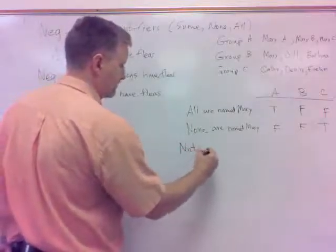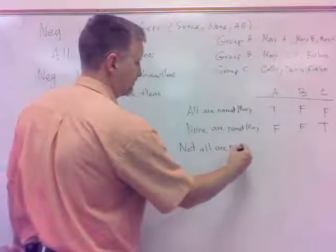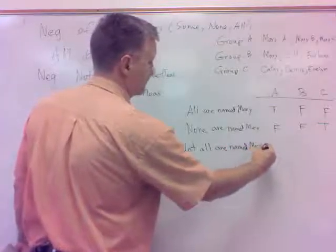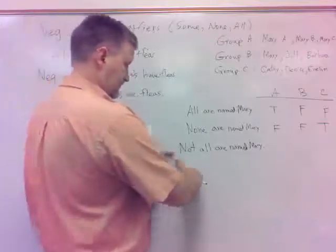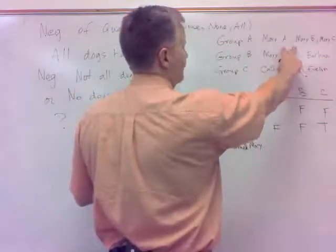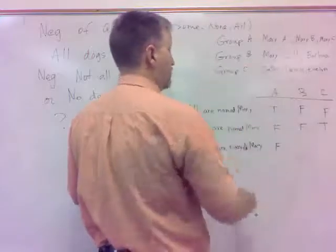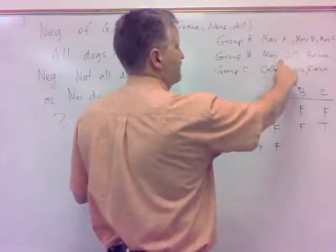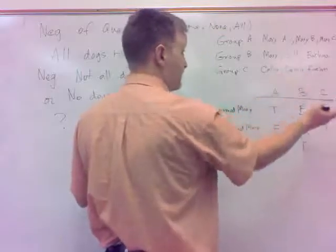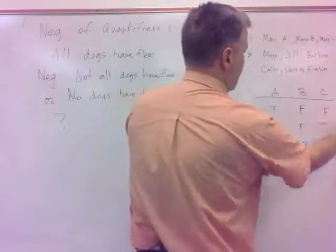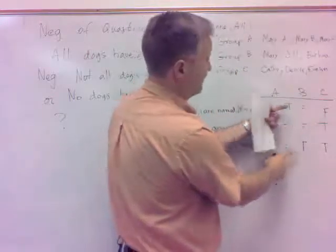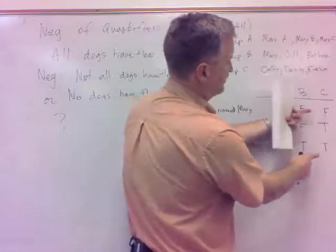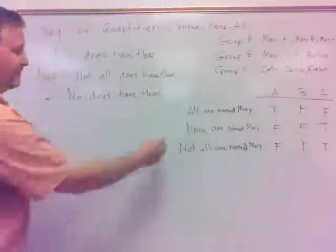It was suggested we go with 'not all are named Mary.' In group A, not all of them are named Mary — that's false, because they all are. In group B, not all of them are named Mary — that's true. In group C, not all of them are named Mary — that's true too. You notice that IS a true negation: 'all' gave true, false, false and 'not all' gives false, true, true — it's a true negation.